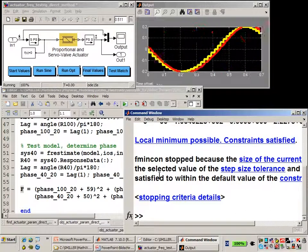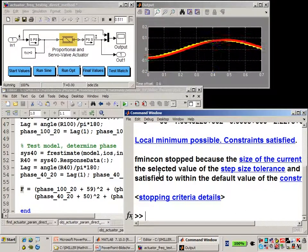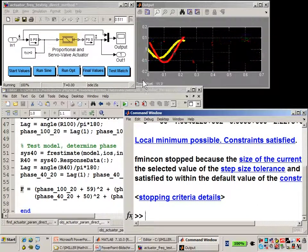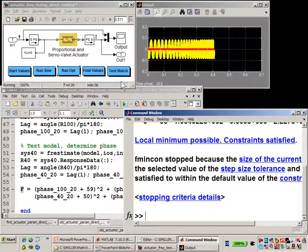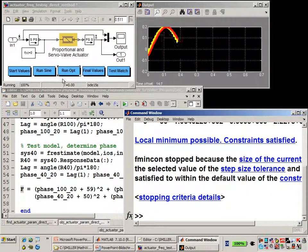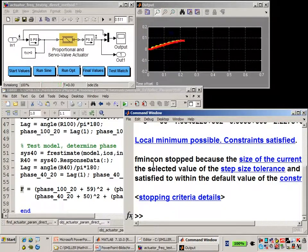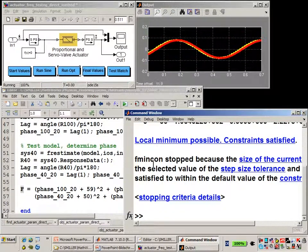So we can see that fmincon has completed its optimization. It has brought the two curves as close as possible. At the moment now, we're generating the frequency response curves both with the original values and with the values that fmincon calculated. And we'll compare those to the characteristics from the data sheet.